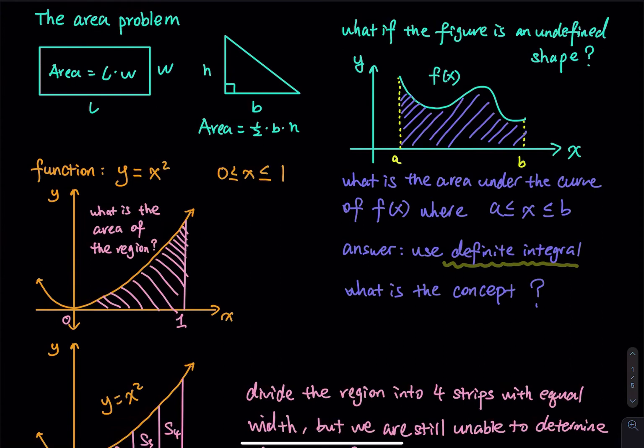In this video we are going to talk about area. Back in geometry, the area of a rectangle is length times width. The area of a triangle is base times height divided by 2. The reason you divide by 2 is that base times height gives you the area of a complete rectangle, and you cut that in half to get a triangle.